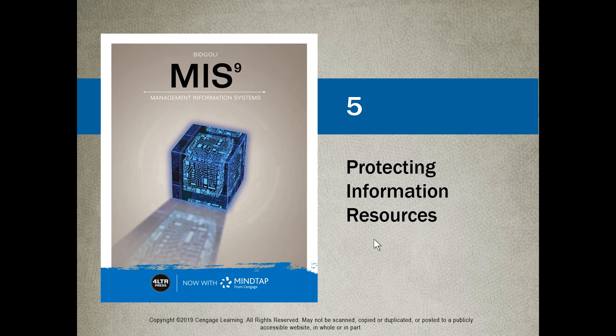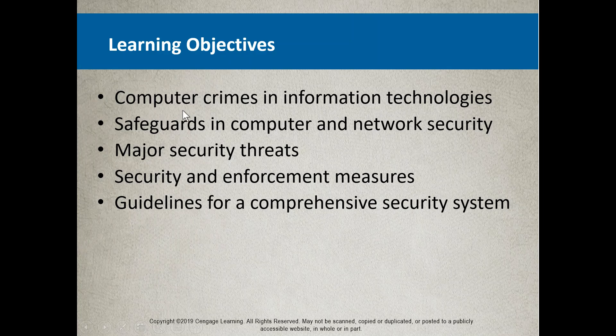Chapter five focuses on computer crimes in the information technology industry, safeguards in computers and network security, major security threats — there are a lot of questions on the quizzes and midterm about those — security and enforcement measures to mitigate these things, and guidelines for a comprehensive security system. Those are the key learning objectives of chapter five.